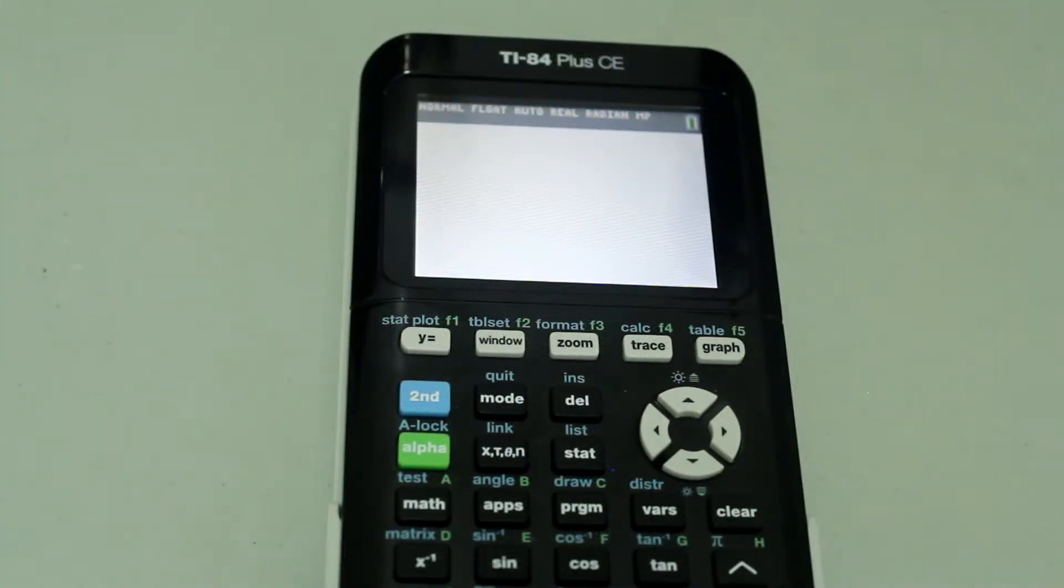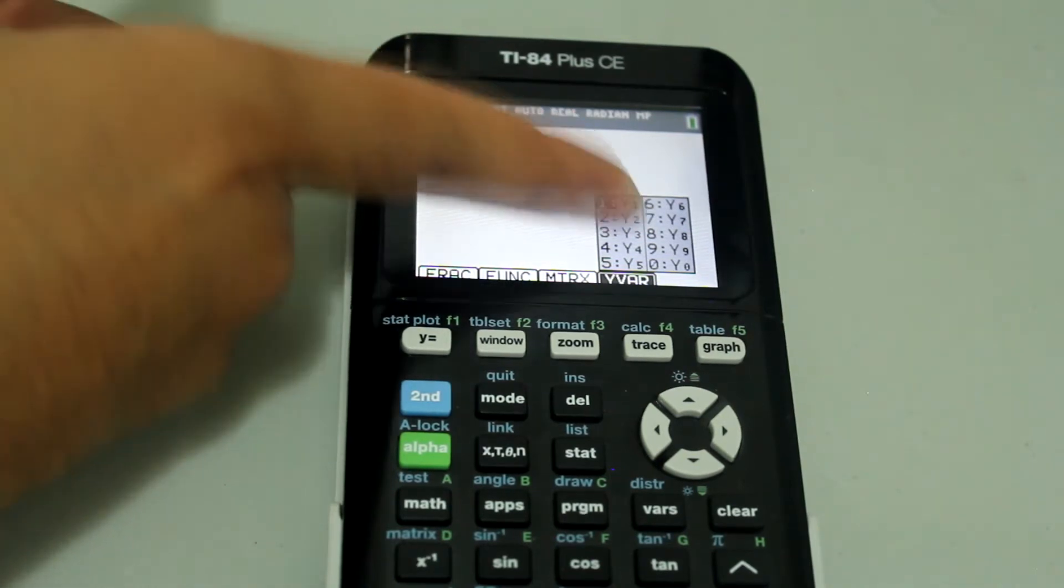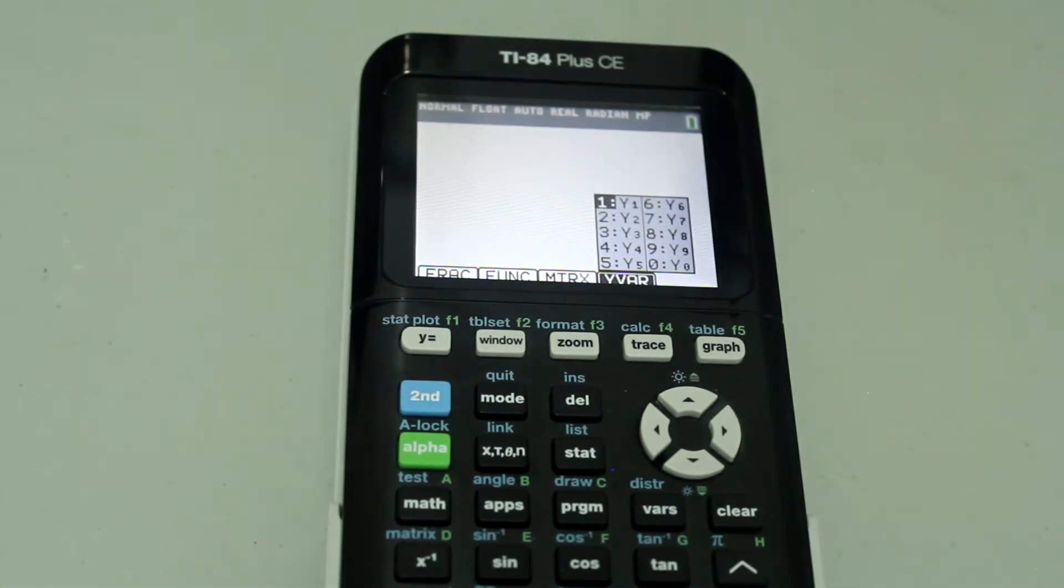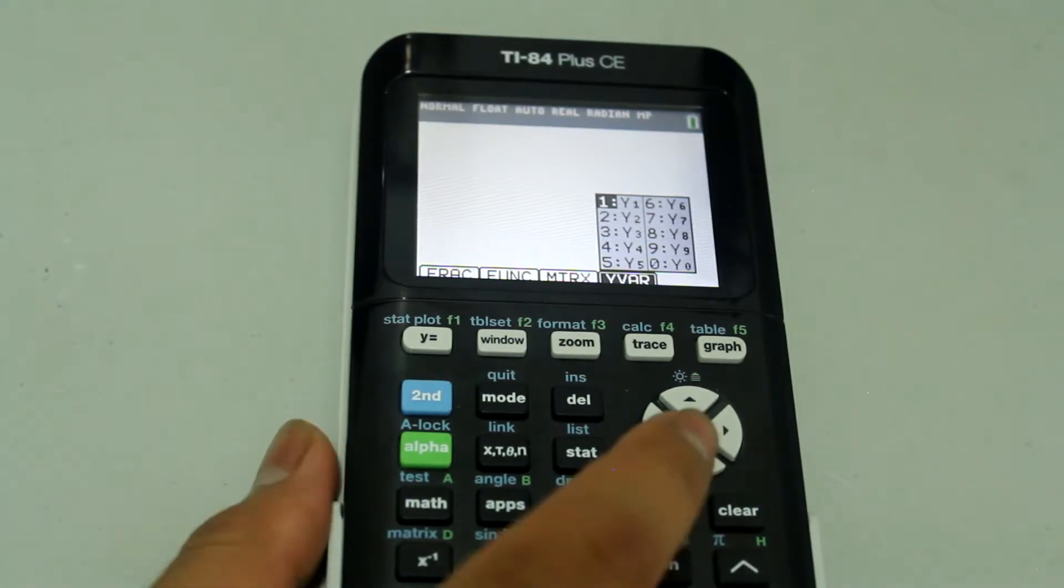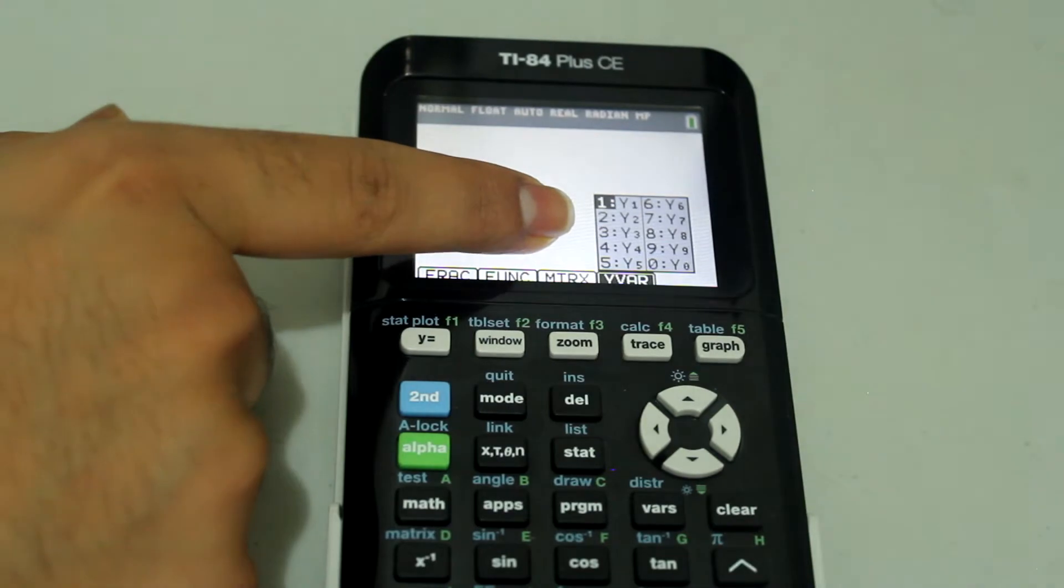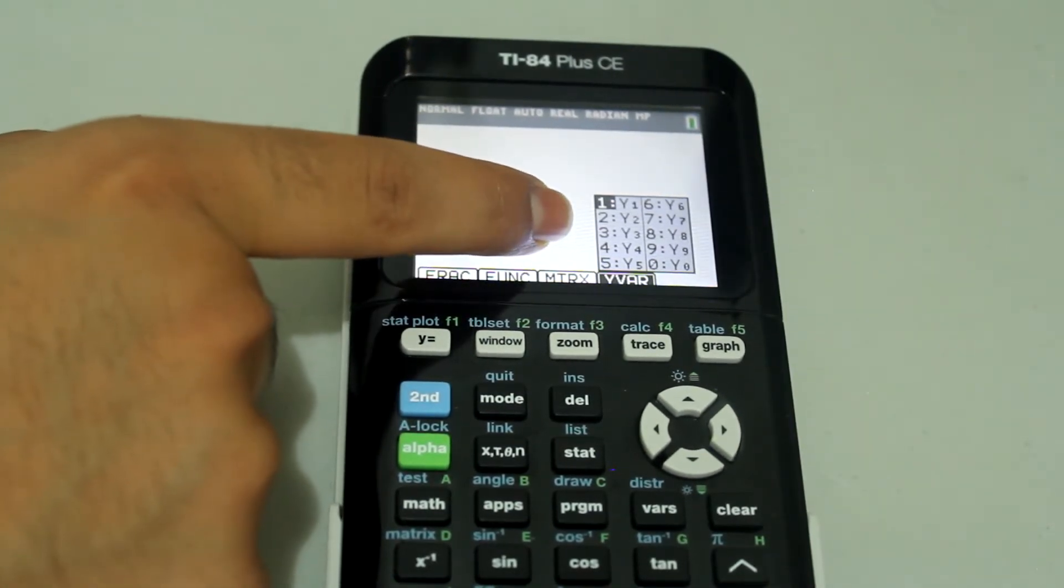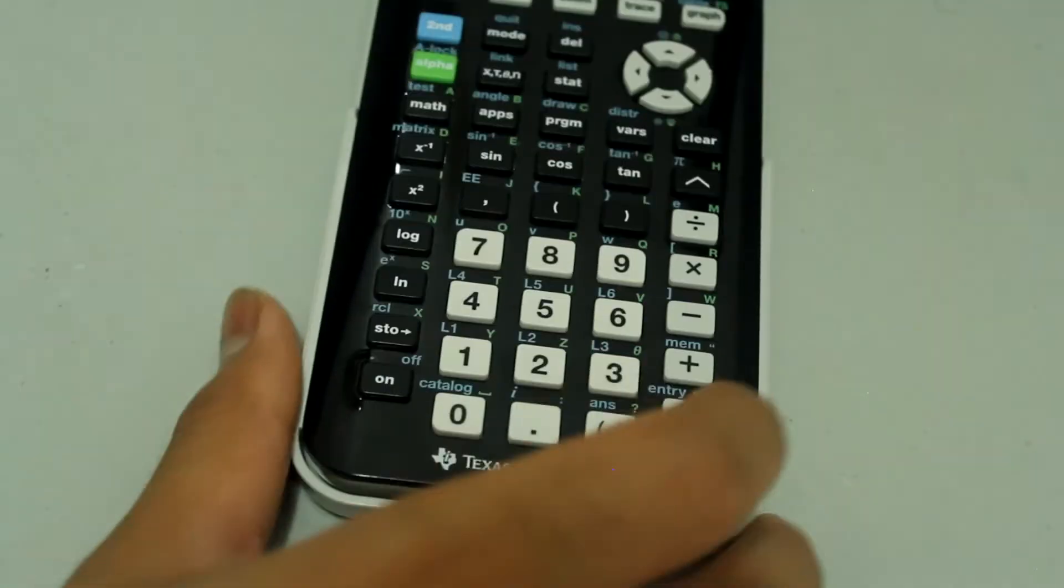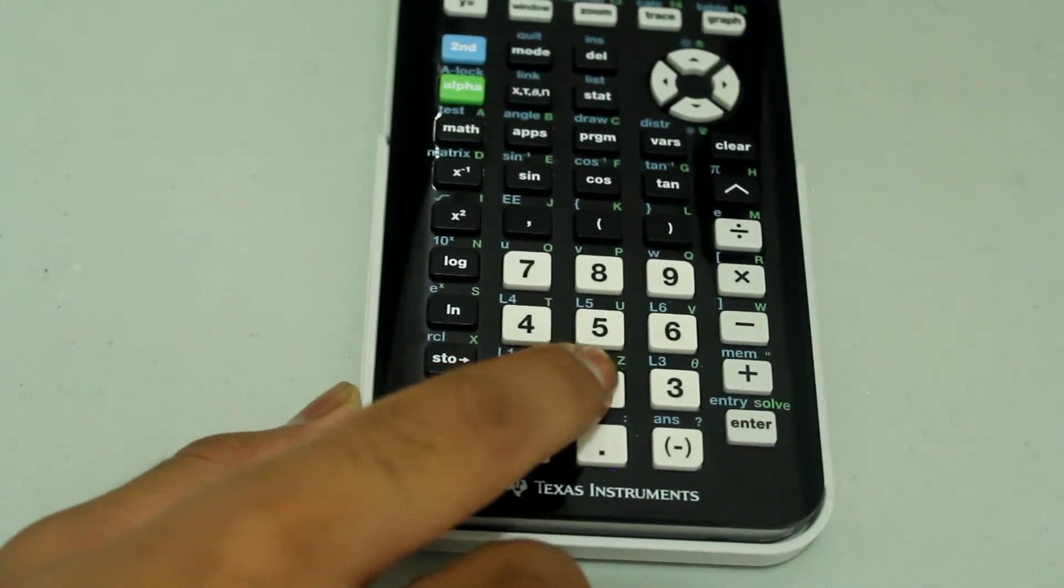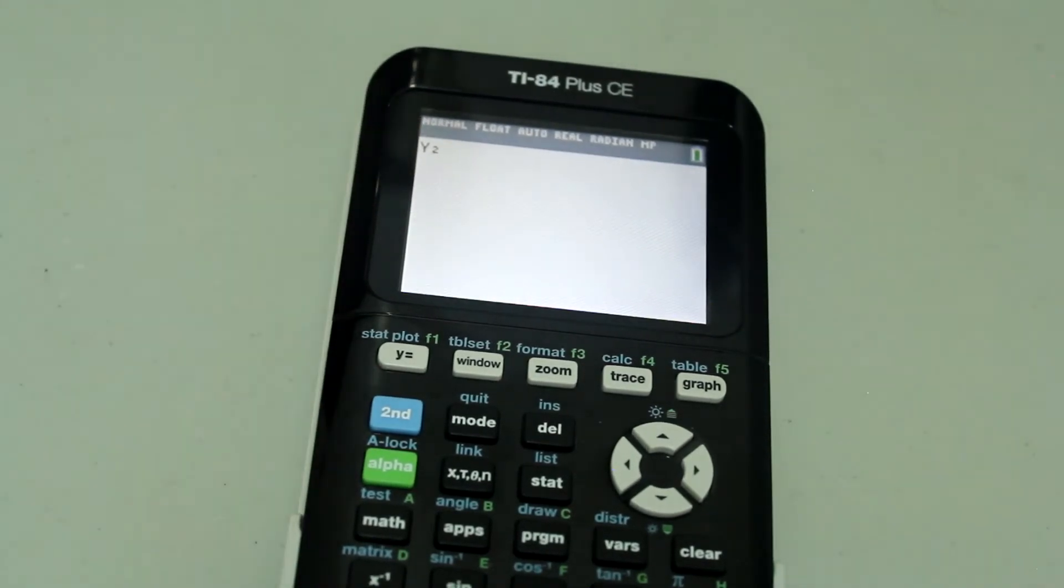Once you're on the home screen, press ALPHA and the TRACE button. That brings up a menu of the Y's. First, we're going to select Y2. You could arrow down and then press ENTER, or you could just type in the corresponding number on the number pad. The corresponding number is 2, so just type in 2 on the number pad, and that selects Y2.